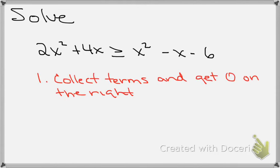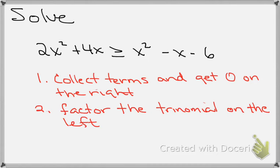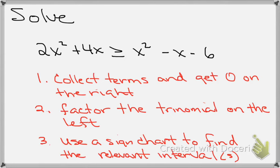We're going to go through some steps. The first step is to collect the terms and get 0 on the right-hand side — collect all of the non-zero terms to the left so the inequality has a 0 on the right. The second step will be to factor the resulting trinomial on the left-hand side. And then our final step will be to use a sign chart to find the relevant intervals that satisfy the inequality.